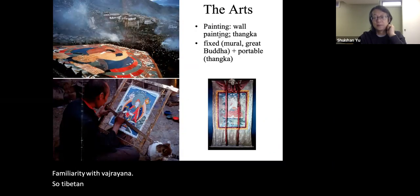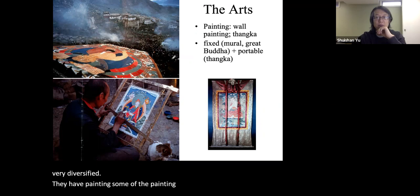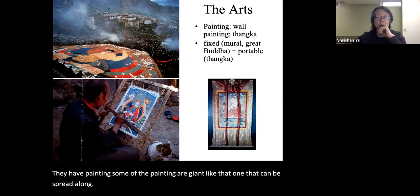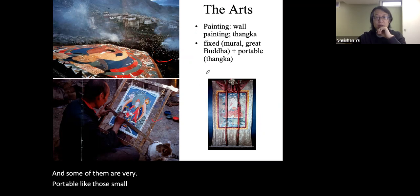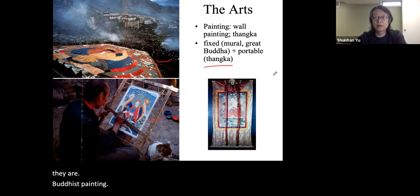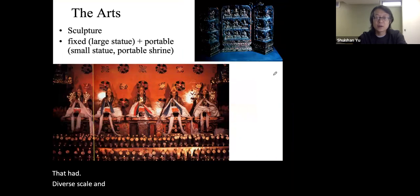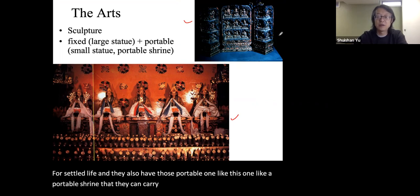Tibetan art, just like the diversity of their life and landscape, is also very diversified. They have paintings of diverse scale — some are giant and can be spread along a hillside, and some are very portable. These paintings are called thangkas — Buddhist paintings with diverse scale and artistic style. They have sculpture as well, big ones for settled life and portable ones like a portable shrine they can carry on horseback for nomadic people.